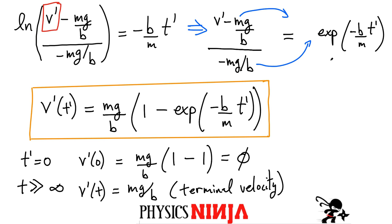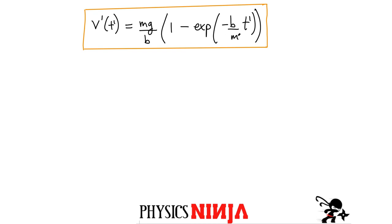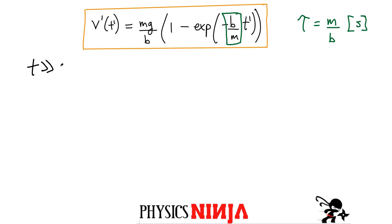One important note about the term B/m in the exponential: the entire argument of the exponential must be dimensionless. Since time appears there, the characteristic time τ = m/B must have units of seconds. So when I said time must be very large, it really only needs to be large with respect to this characteristic time τ. If τ is five seconds, the time might only need to go to 20 — not all the way to infinity.